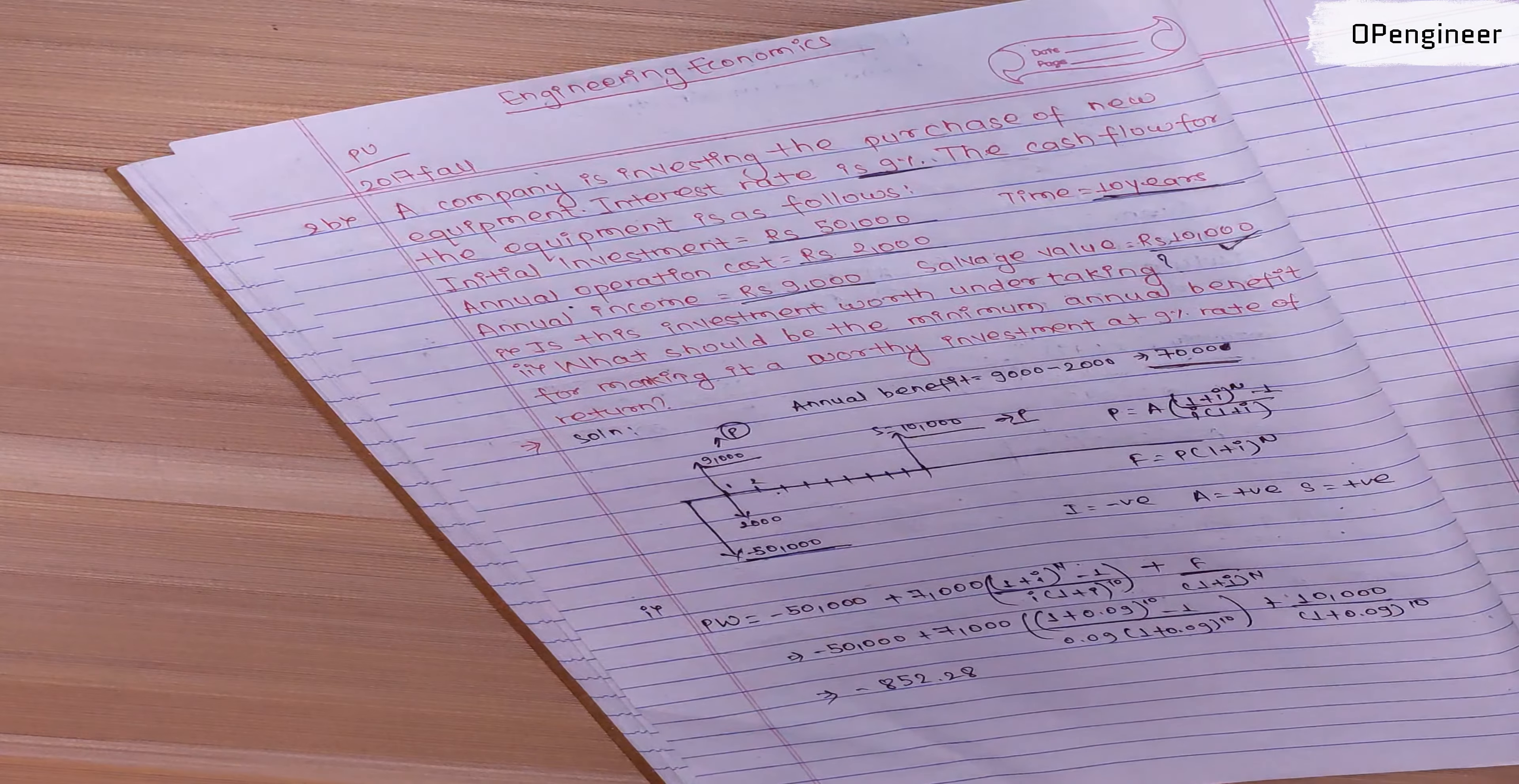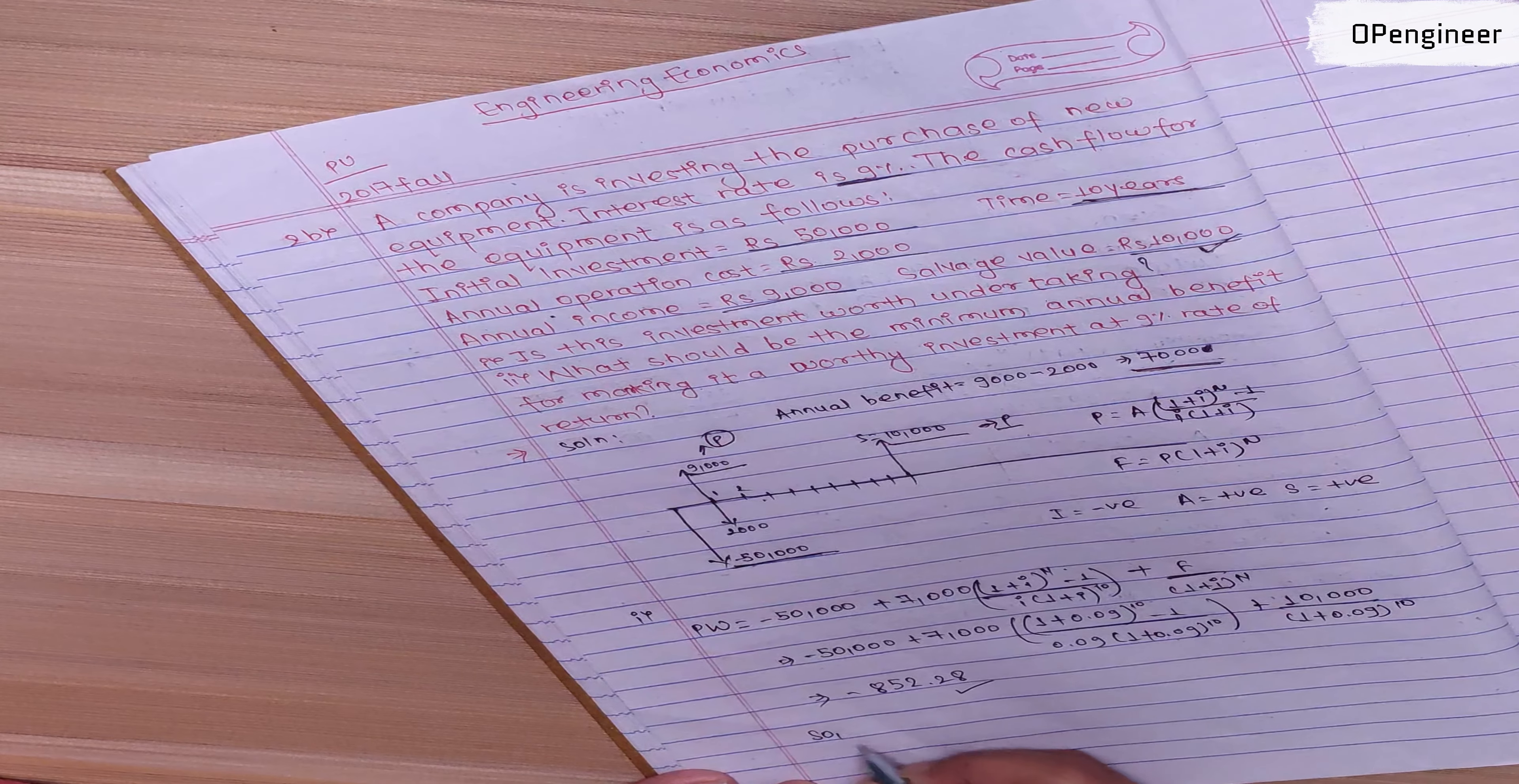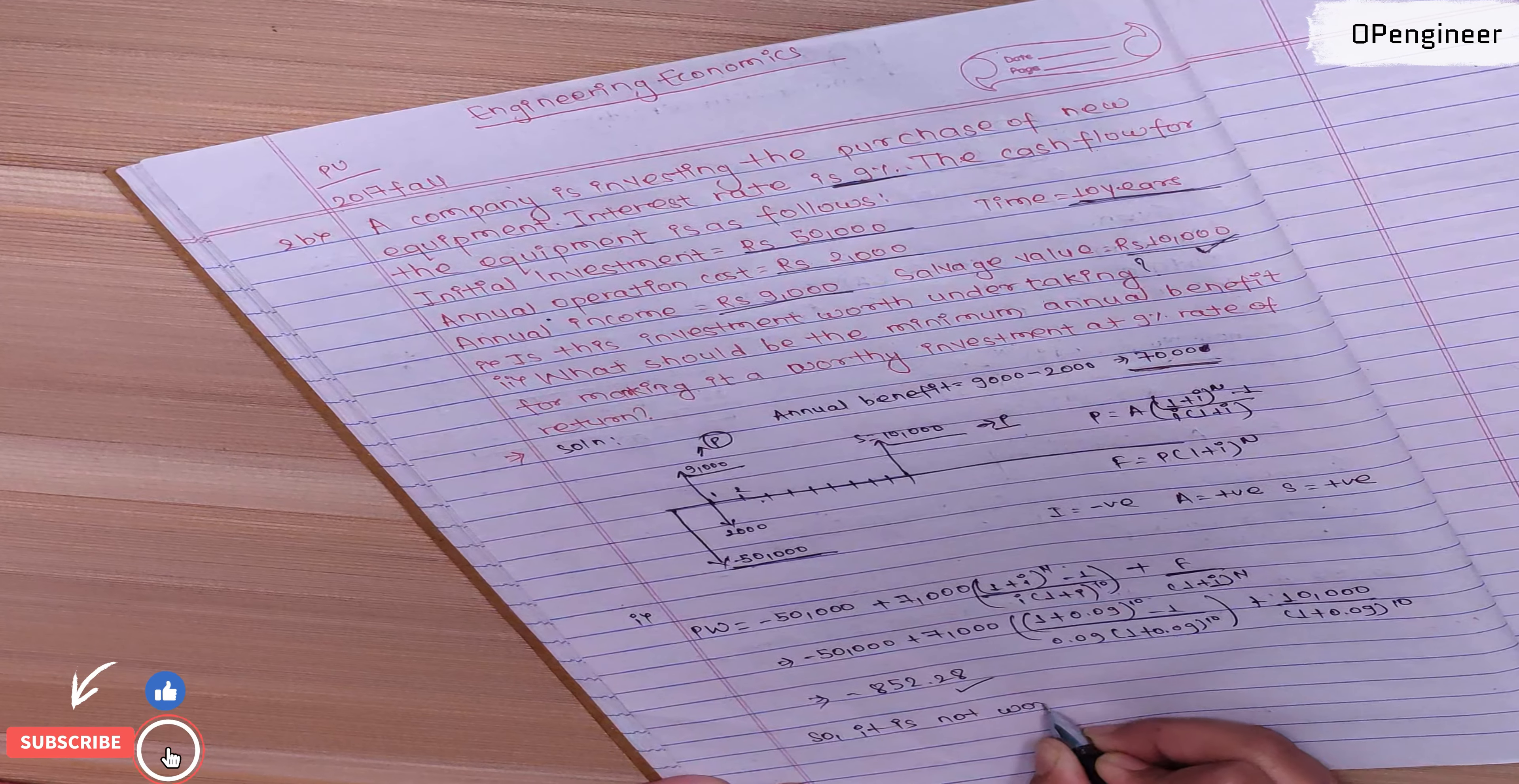Since the present worth is negative, meaning the company has a loss, it is not worth undertaking.